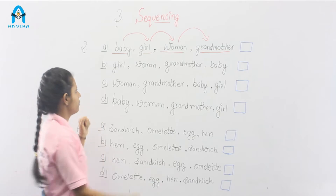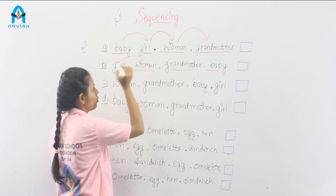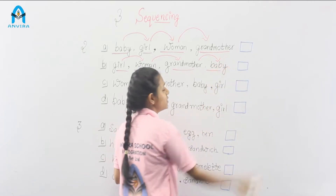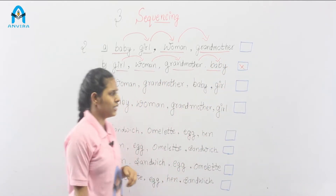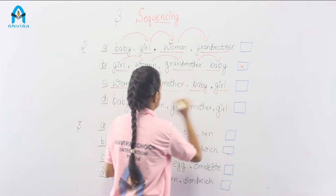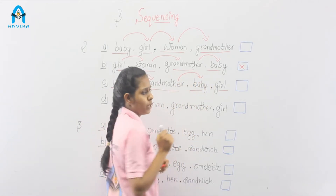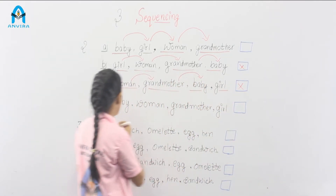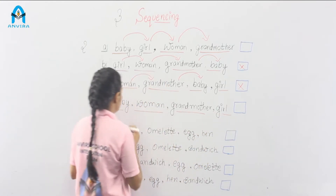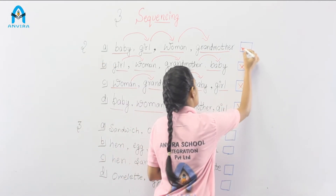Now look at option B: girl, woman, grandmother and baby. When girl grows up it's a woman, when woman grows up then grandmother — but when grandmother grows up, is it a baby? No. It's a wrong sequence. Option C: woman, grandmother, baby and girl. When woman grows up she is a grandmother, when grandmother grows up she is a baby? No, this is wrong. Option D: baby, woman, grandmother and girl — is it a right sequence? No. So our correct option is option A.